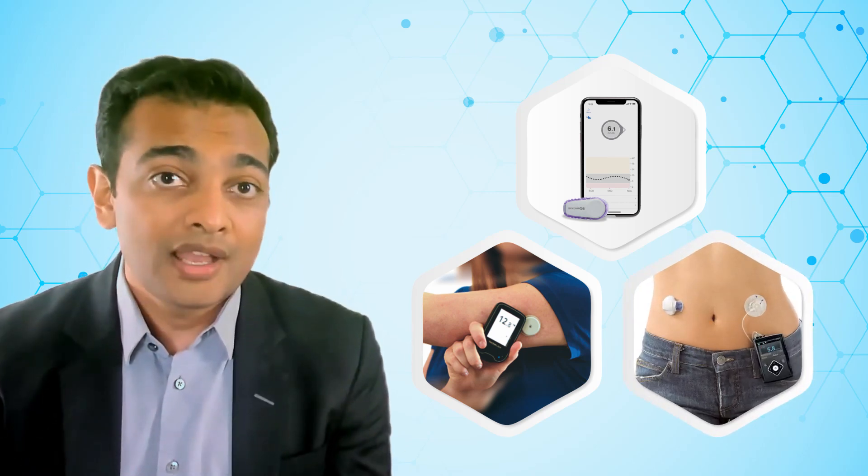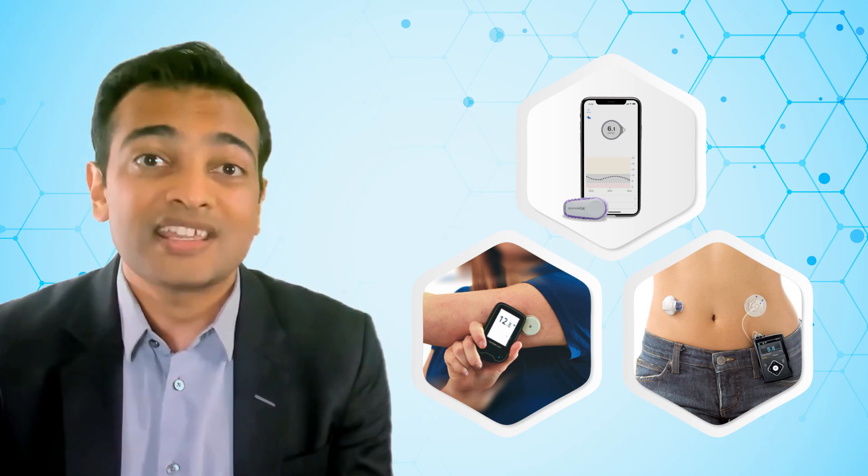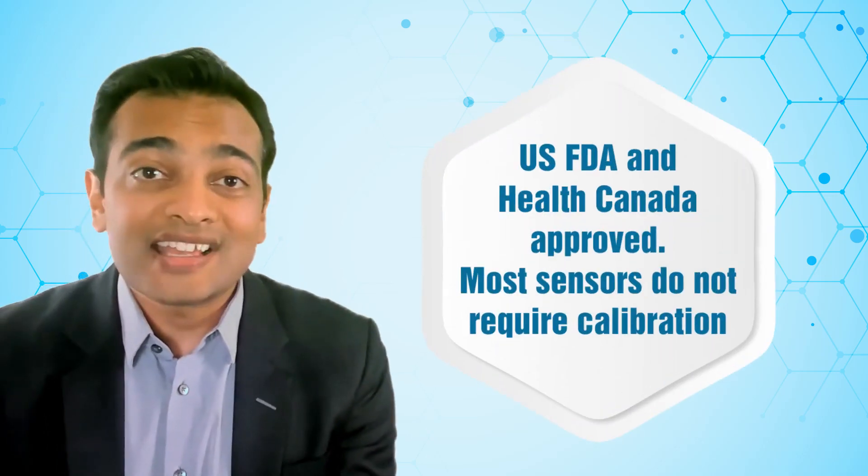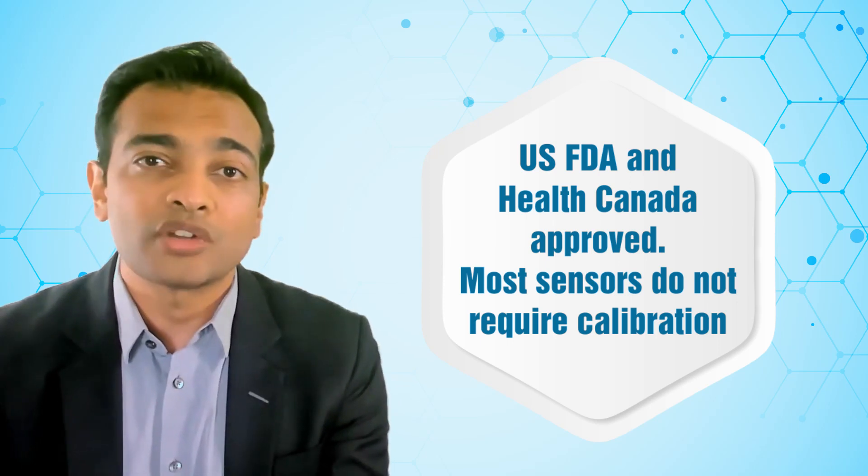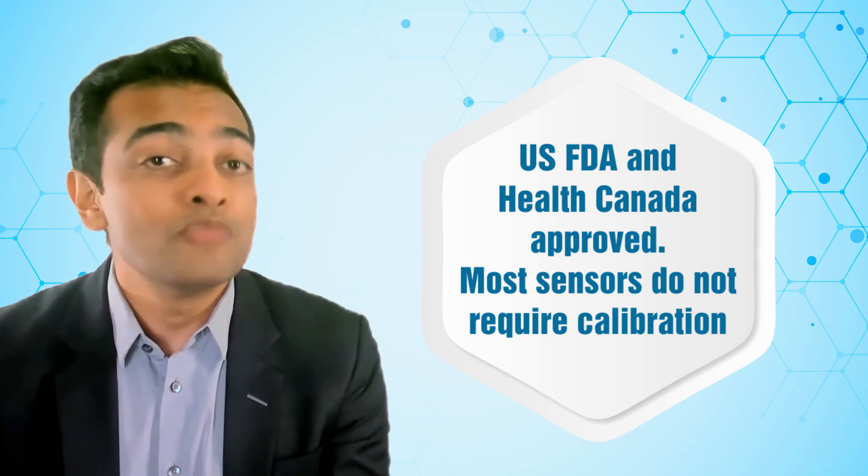The device has a sophisticated algorithm that then calculates the value of the glucose level. This value is then transmitted to a handheld device such as a smartphone, a dedicated reader, or an insulin pump, and the person wearing the sensor gets information regarding the sugar levels within a fraction of a second. The CGM sensors are US FDA and Health Canada approved to substitute instead of finger stick glucose monitoring. They are very accurate and most of them do not require any calibration unless you choose to calibrate against a finger stick reading.